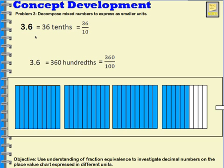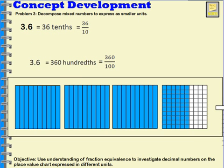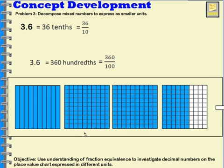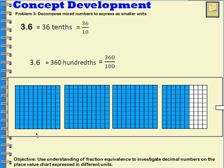We can also show that three and six tenths equals hundredths by taking each area model and separating it into a hundred pieces — decomposing the tenths into hundredths and showing that the equivalence is still there. I still have the same amount shaded, but now I have a different number of parts: one hundred, two hundred, three hundred, sixty parts shaded. So, three hundred and sixty hundredths.